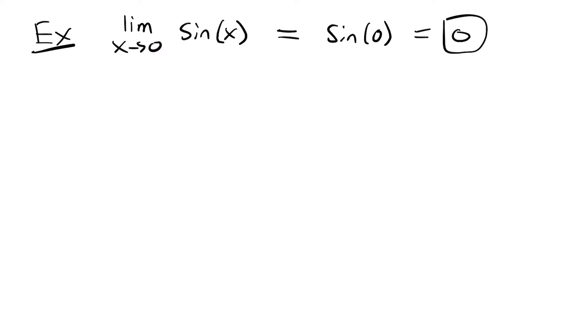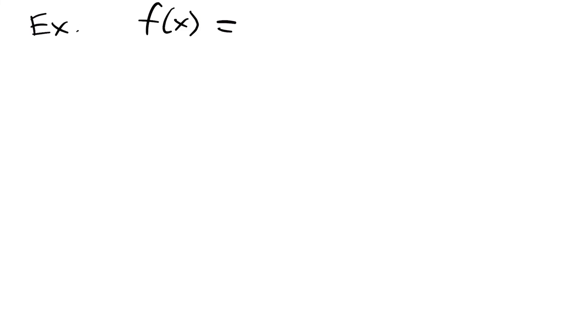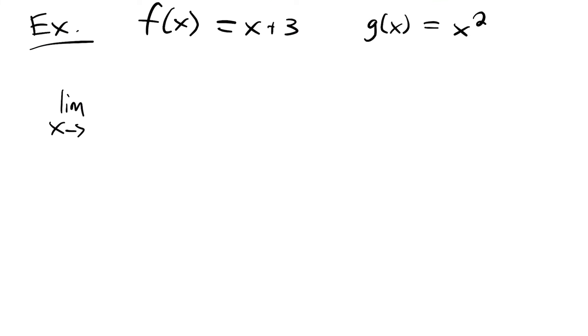Now we're going to look at an example that uses some of the properties of limits from our previous lesson. If you haven't watched that lesson, I'd recommend going back to review those properties. We'll have two functions: f of x equals x plus 3, and g of x equals x squared. We're going to look at the limit as x approaches 1 for f of x plus g of x.